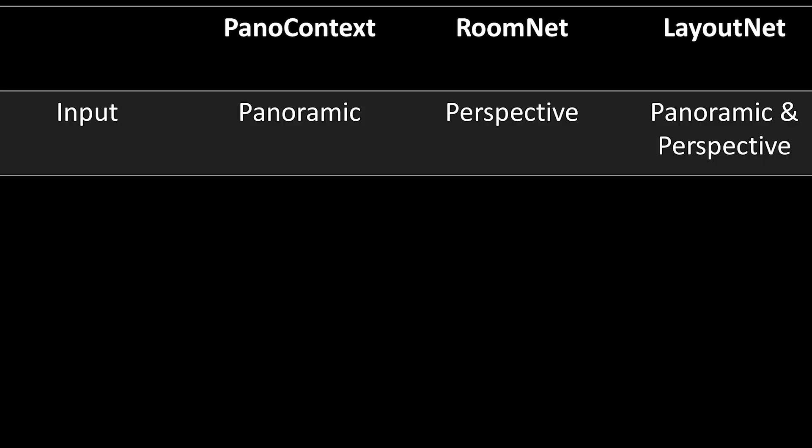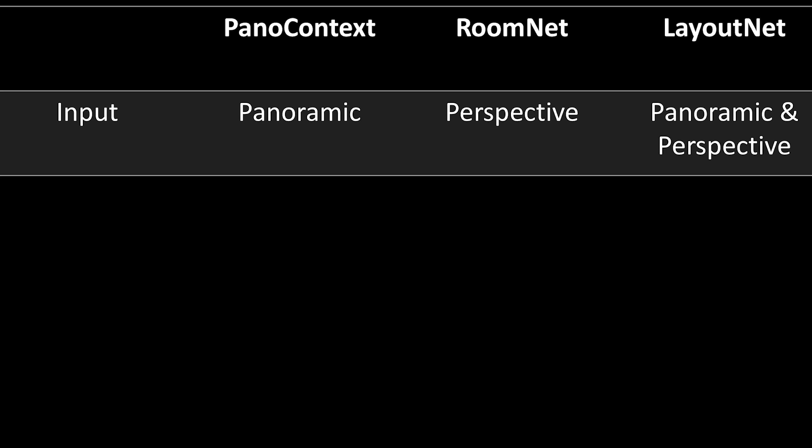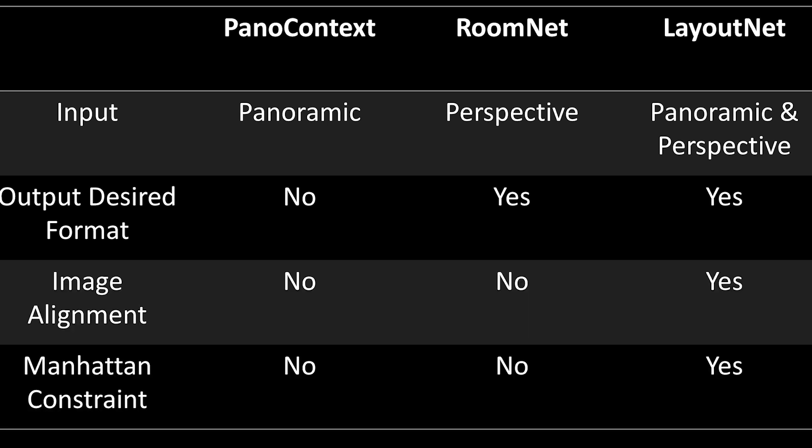In terms of input, PanoContext and RoomNet can only take one type of images, while LayoutNet can take both. In addition, the output of RoomNet and LayoutNet are the boundaries and corners of the room, but the output of PanoContext requires additional post-processing steps to attain these results. Among the three, only LayoutNet applies an image alignment technique to ensure the floor is on the XZ plane, and it adopts Manhattan Constraint, which guarantees the walls are perpendicular to the ceiling and the floor. These differences are proven to improve the performance of the presented algorithm.